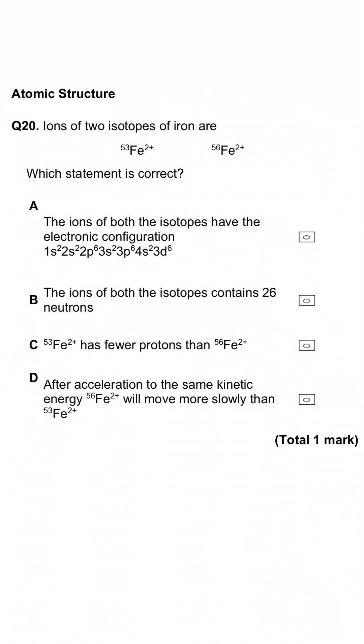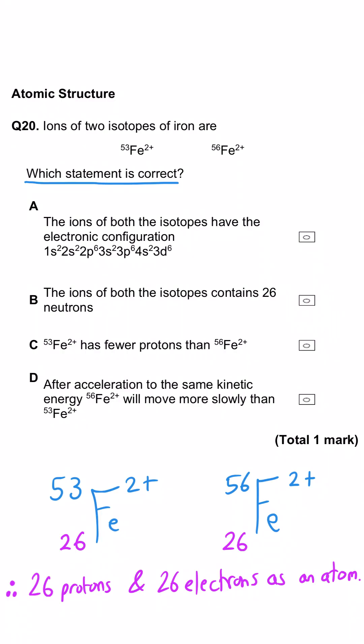This question is asking us which of these statements are correct for these two different isotopes of iron. The first one's about electron configuration, which is linked to atomic number. Iron has an atomic number of 26, so it has 26 electrons as an atom. As a two-plus ion, which both of them are, it's lost two electrons, so it needs to add to 24. This adds up to 26, so too many electrons.